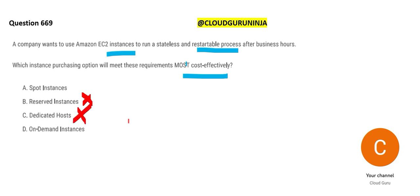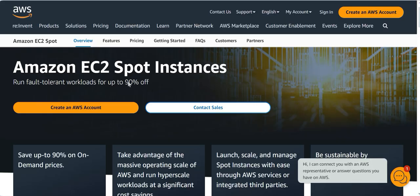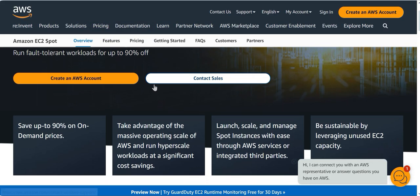Reserved instances are like a marriage — your partner is reserved for you, but is that cost-effective? No. You have to sign a one-year or three-year agreement and pay for it. On-demand instances are cheaper than reserved and dedicated, but still not cheaper than spot instances. Spot instances give you up to 90% off.